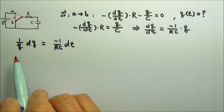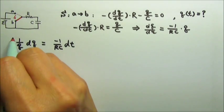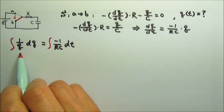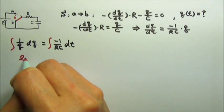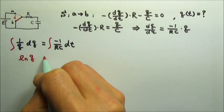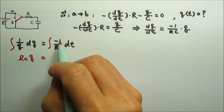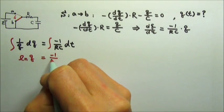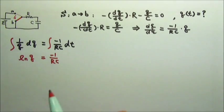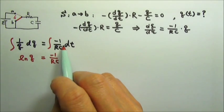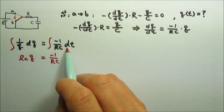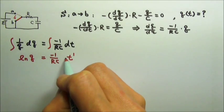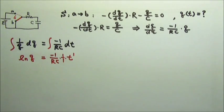This looks like it is begging you to put the integral sign on each side. When we integrate 1 over q, we get natural log q. On this side, we have negative 1 over rc — that is a constant coefficient, so we can leave it out — and then we integrate 1 dt. Since 1 is t to the 0th degree, we get t to the 1st degree, multiplied by 1 over 1 in front.